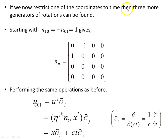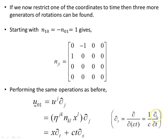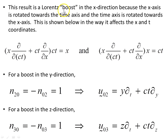If we restrict one coordinate to time, three more generators can be found. Starting with n_10 equals minus n_01 equals 1 (0 being the time component), gives this matrix. Performing the same operations as before, and remembering that d/dt is this object here, we get this generator of rotations. This result is the Lorentz boost in the x-direction, because the x-axis is rotated towards the time axis and the time axis is rotated towards the x-axis, which is the definition of the Lorentz boost.